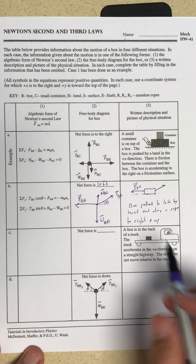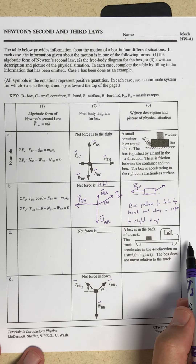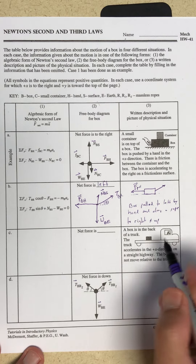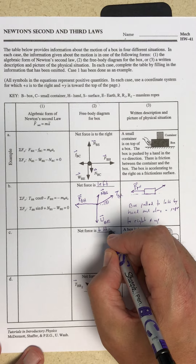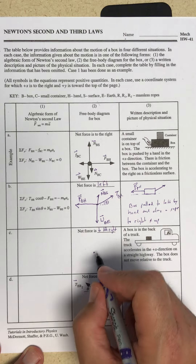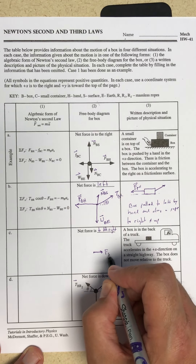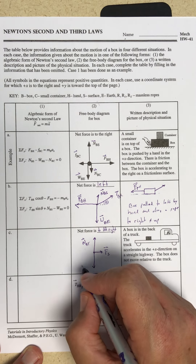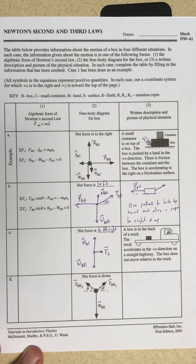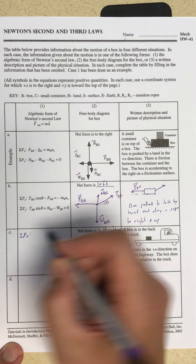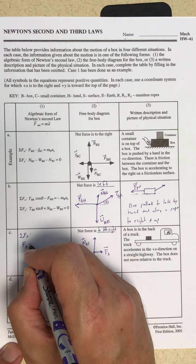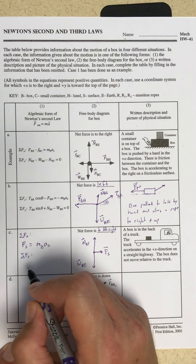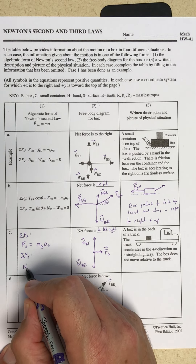In case three: a box is in the back of a truck; the truck accelerates in the positive x-direction on a straight highway; the box does not move relative to the truck. Newton's second law tells me the net force is to the right. The free body diagram has a force of static friction to the right, a normal force on the box due to the truck, and the weight of the box due to its interaction with the earth. Sum of forces in x: static friction equals mass of the box times acceleration in x. Sum of forces in y: normal force on the box due to the truck minus weight equals zero.